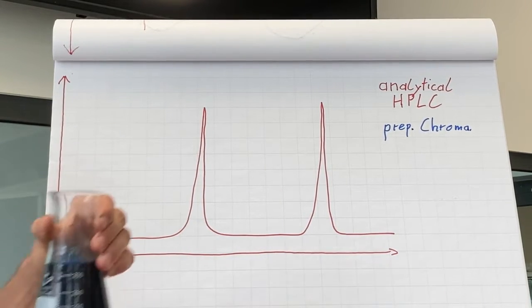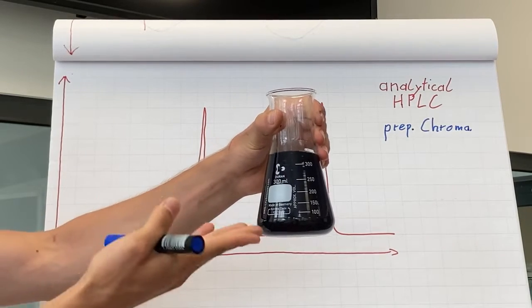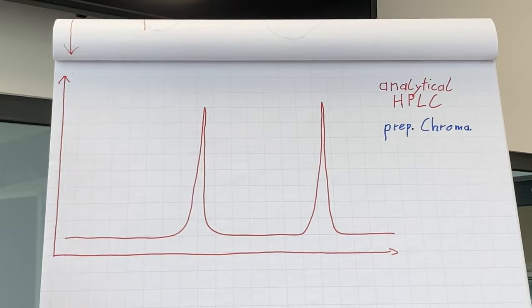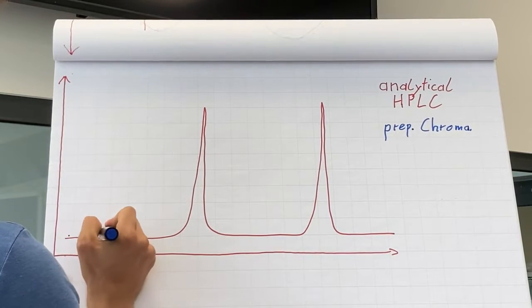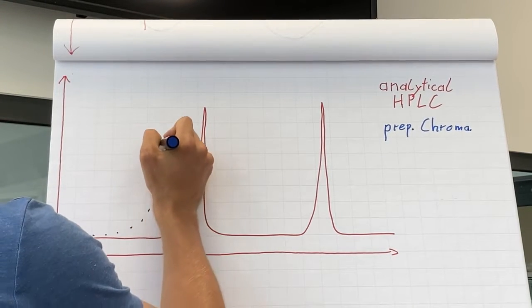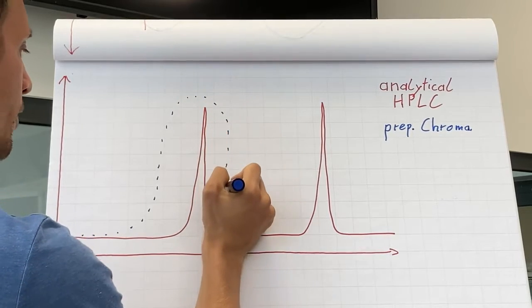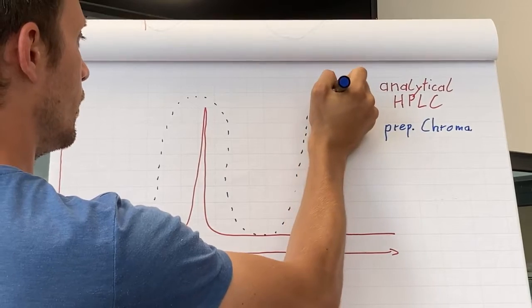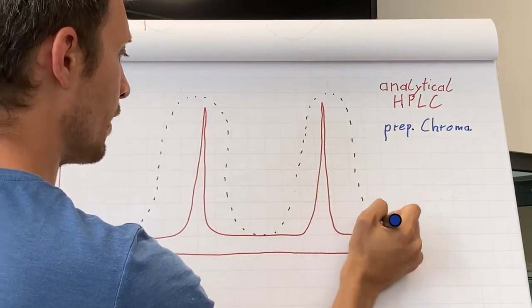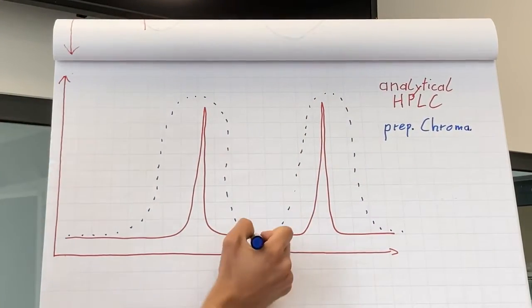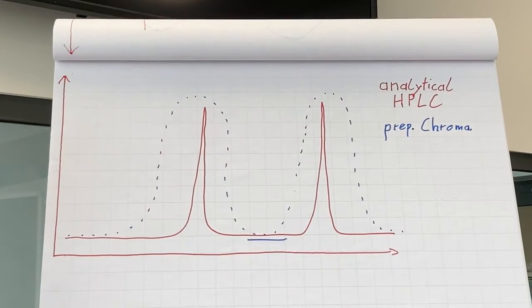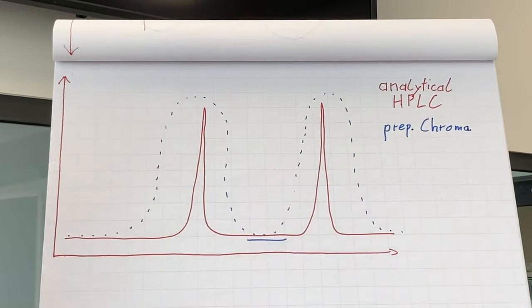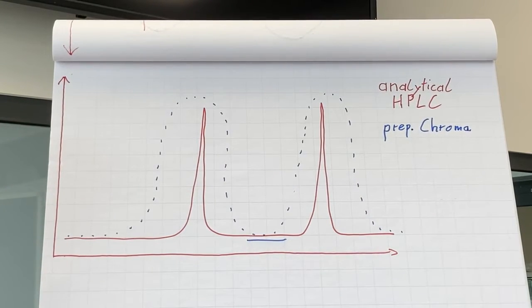But what happens if you inject a high sample volume like this blue solution? We get wide peak shapes. But as you can see, the peaks are still separated. In this case, we are able to collect both fractions with the fraction collector separately.